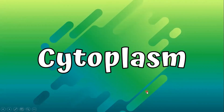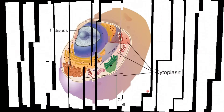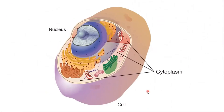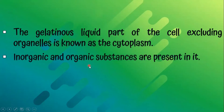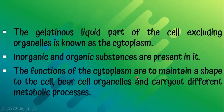Let's talk about cytoplasm. The gelatinous liquid part of the cell excluding organelles is known as the cytoplasm. Inorganic and organic substances are present in it. The functions of the cytoplasm are to maintain the shape of the cell, house the cell organelles, and carry out different metabolic processes.